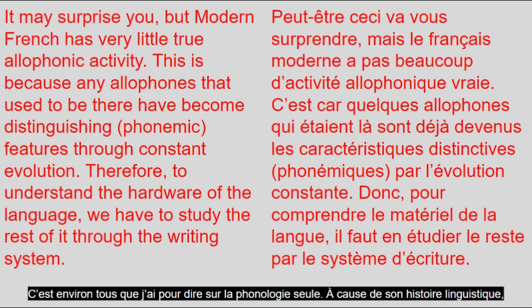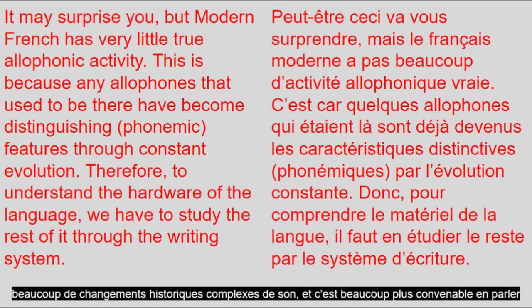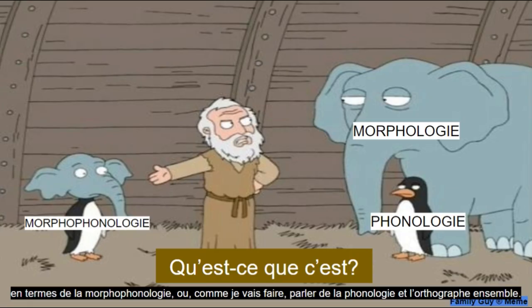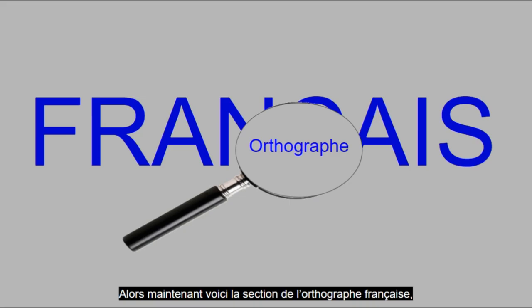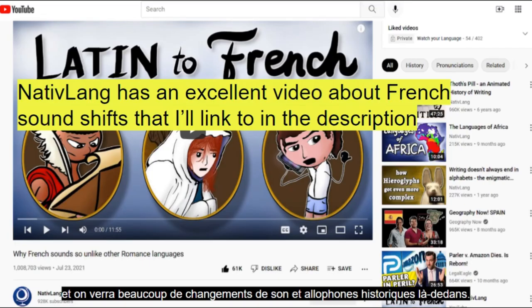This is all I have to say about phonology alone. Due to its linguistic history, French is a language where pure modern allophones are hard to come by due to a lot of complex historical sound changes, and it's much more apt to talk about it in terms of morphophonology or, as I'm about to do, to talk about the phonology and orthography together. So now here's the part about French orthography, and you'll see a lot of historical sound changes and allophones within it.